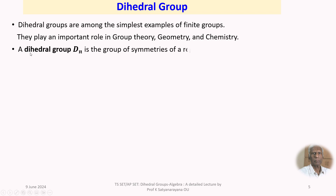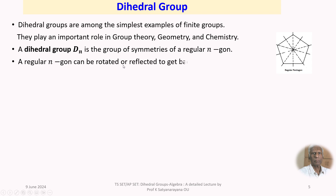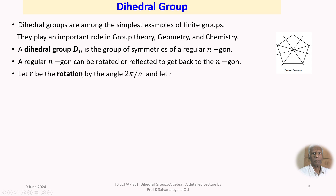A dihedral group D_N is the group of symmetries of a regular N-gon. Here we have shown a regular pentagon — that is a 5-gon — and its symmetries about their axes are abstractly shown. A regular N-gon can be rotated or reflected about an axis to get back the N-gon. Let R be the rotation by angle 2π/N, and let S be the reflection about an axis in D_N.